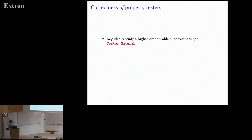So then there's the second key idea here, which is to study a higher order problem: not to study the correctness of arbitrary properties, but the correctness of other property testers. And so if we could somehow evaluate this property tester on all such properties on the naturals, then we can learn something about it.